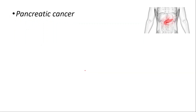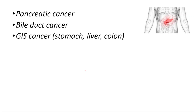In general, we see elevated levels of CA-19-9 in pancreatic cancer, bile duct cancer, and gastrointestinal cancers such as stomach cancer, liver cancer, and colon cancer.